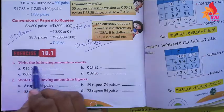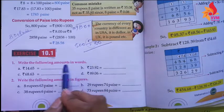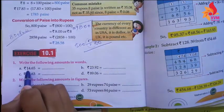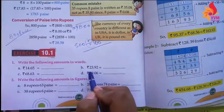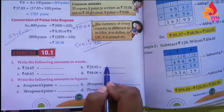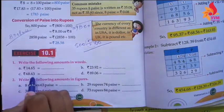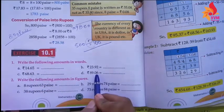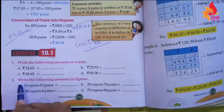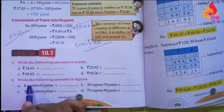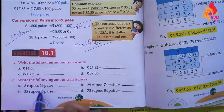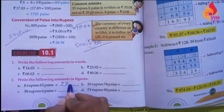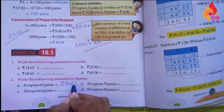Next, Exercise 10.1. The first question: write the following amounts in words. We have to write these amounts in words — for example, 14 Rupees 65 Paise, 23 Rupees 92 Paise, 68 Rupees 63 Paise, and 89 Rupees 6 Paise.